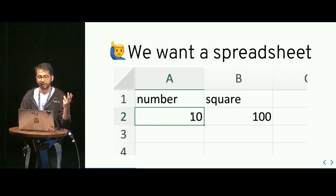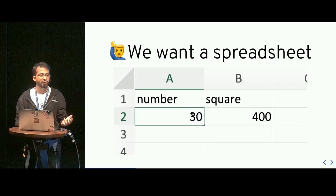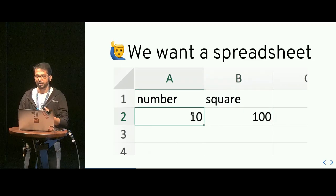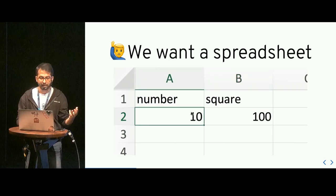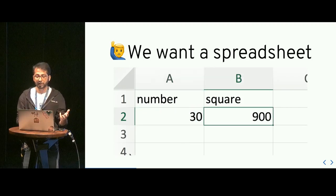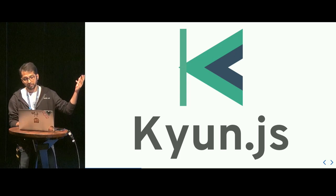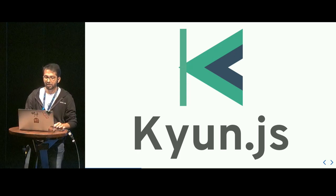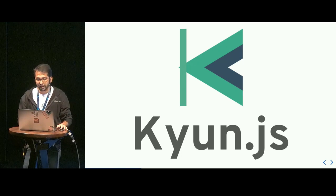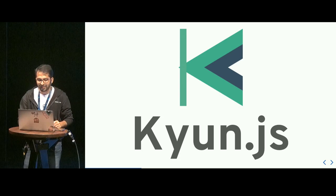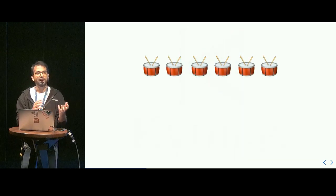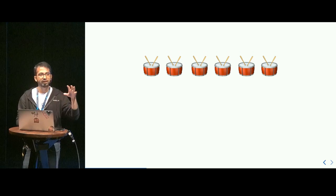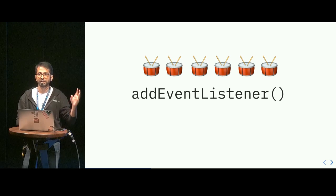What is a reactivity system? In the simplest of terms, a reactivity system is like a spreadsheet: we have two columns and the value of one changes based on the other. What we want is a formula to calculate the value of square. So the talk becomes: how do we make JavaScript act like a spreadsheet? And we need some inspiration. In fact, we have been doing this reactivity thingy all our lives using addEventListener.